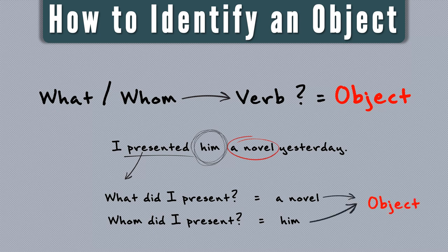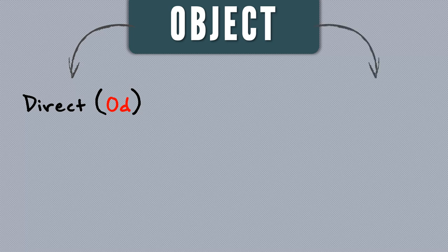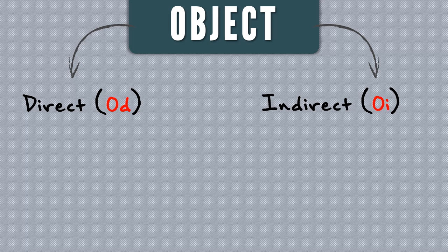Objects are basically divided into two categories. The first is the direct object — I'll use OD as its short form. The second is the indirect object — I'll use OI as its short form.